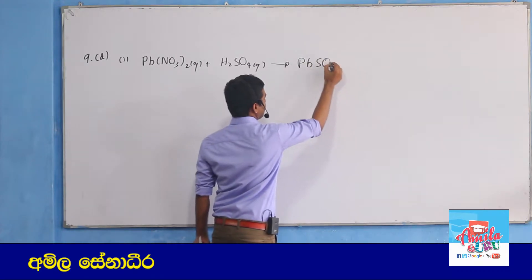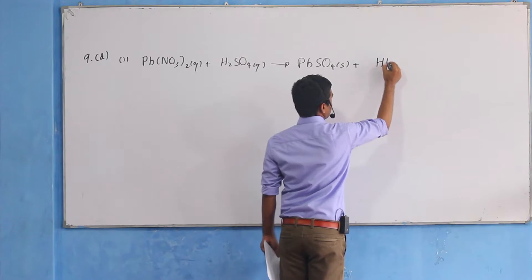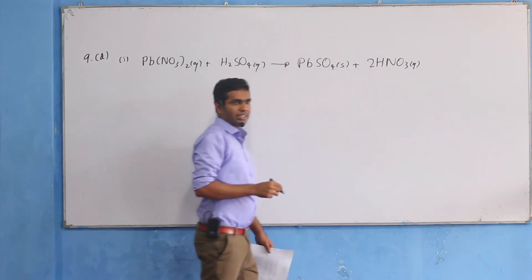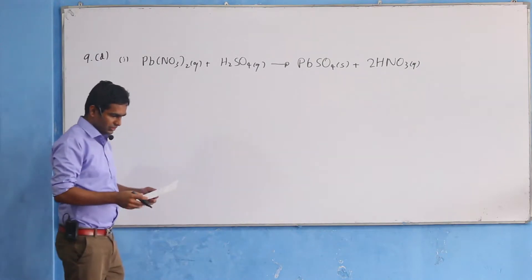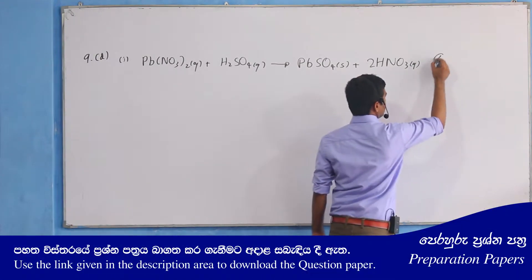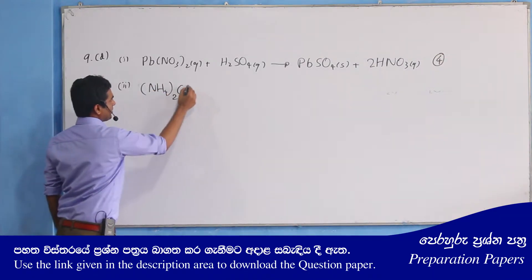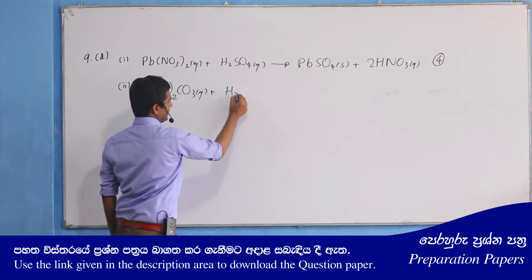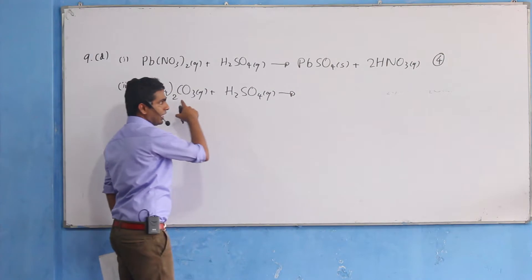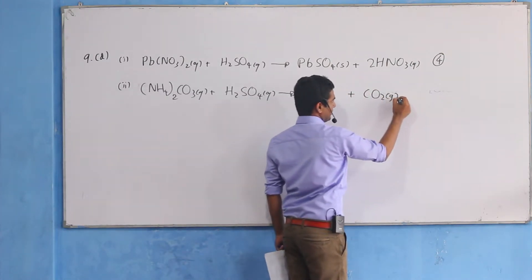Lead sulfate, lead sulfate. This is nitric acid. Ammonium carbonate — sulfuric acid. Carbonate is a very small amount of sulfuric acid.